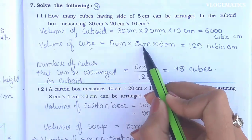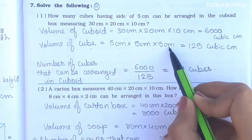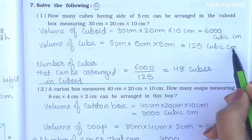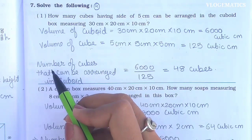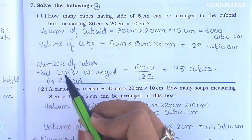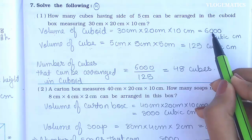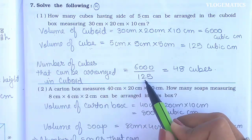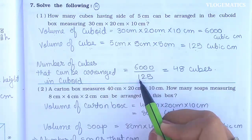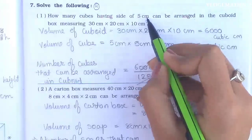Now, volume of cube = length × breadth × height = 5 cm × 5 cm × 5 cm = 125 cm³. Number of cubes that can be arranged in the cuboid = volume of cuboid ÷ volume of cube = 6000 ÷ 125 = 48. We can arrange 48 cubes of 5 cm measurement.